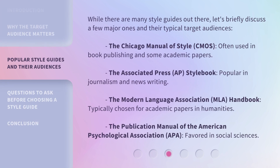While there are many style guides out there, let's briefly discuss a few major ones and their typical target audiences. The Chicago Manual of Style, CMOS, often used in book publishing and some academic papers. The Associated Press, AP, stylebook, popular in journalism and news writing. The Modern Language Association, MLA, handbook, typically chosen for academic papers in humanities. The Publication Manual of the American Psychological Association, APA, favored in social sciences.